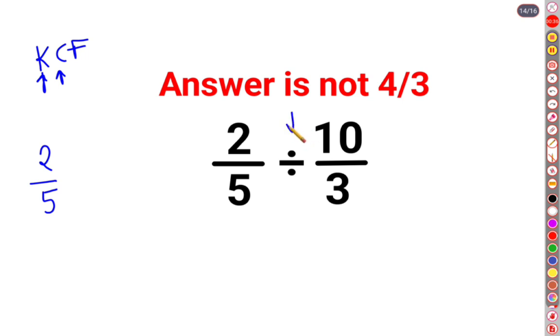C stands for changing the division sign to multiplication. F stands for flipping or taking the reciprocal of 10 upon 3, which is 3 by 10.